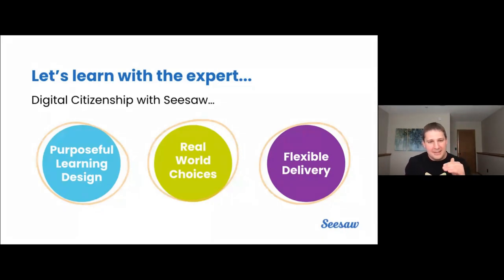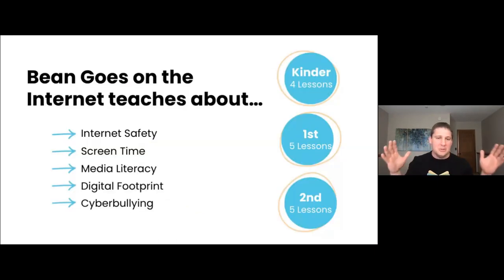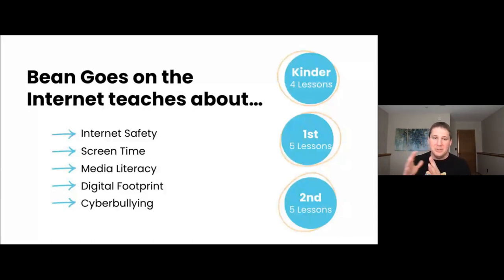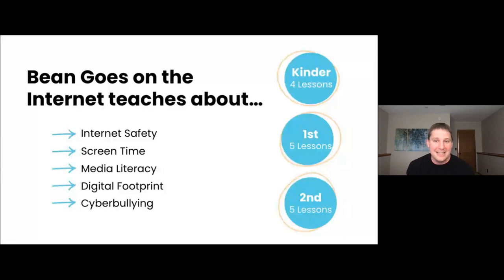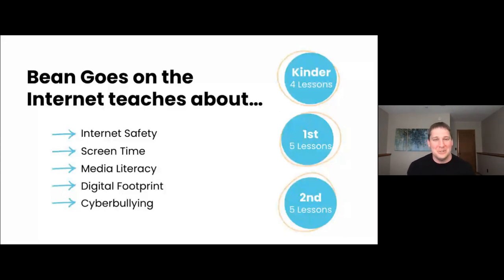Before we jump into looking exactly at the lessons, I want to give you a picture of what the whole scope is for this collection. Bean Goes on the Internet is a K-2 collection, and that's kind of unique in and of itself. We know that K-2 students often don't get exposed to these computer literacy skills, but this is all purposefully designed to make sure that these students have the maximum capacity they can at that really young age. This is all aligned with CSTA, ISTE, and ELA standards, and it's designed to teach even those youngest learners these digital citizenship skills.